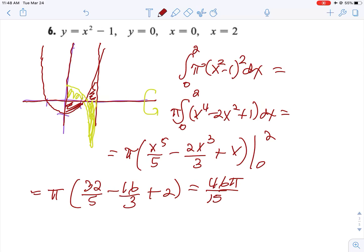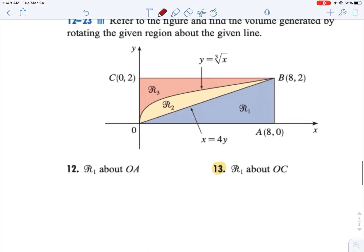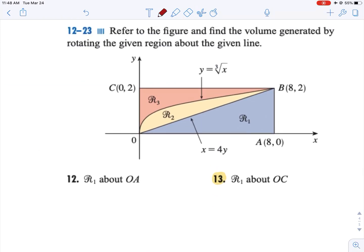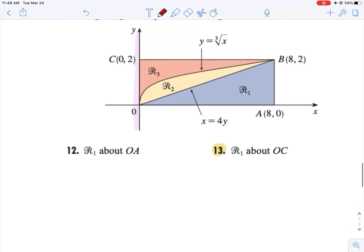And then I would like to do problem 13. Now this time we are rotating the R1 section about a horizontal line. I'm sorry, about a vertical line. We haven't done many when we rotate around something vertically. So let's first talk about our inner and outer radius.